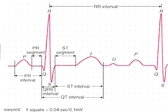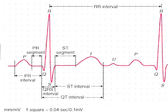RR interval is the interval between two R waves. PR interval is the interval between P and R. ST segment is the linear interval at the end of S wave and the beginning of the T wave, whereas ST interval is the interval between Q and the end of T. QT interval is the interval between Q and the end of T. QRS is the interval between Q and S.